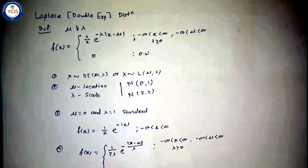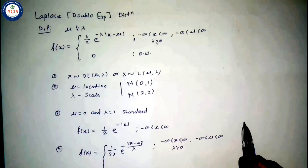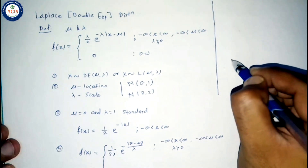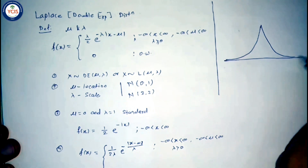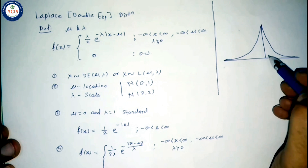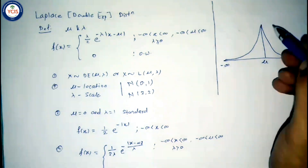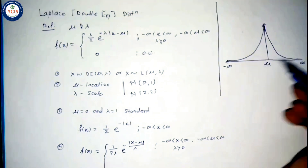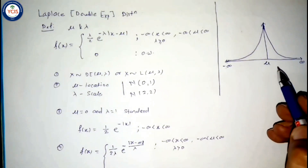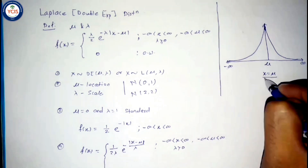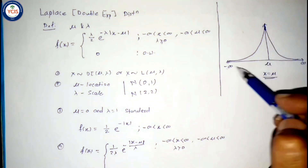The nature of the curve of the double exponential distribution with parameters mu and lambda is similar to the normal curve — it is a symmetric curve, but with a higher peak than the normal distribution. The center value is mu. The curve is symmetric about x = mu, attains the maximum value at x = mu, and decreases exponentially on both sides.